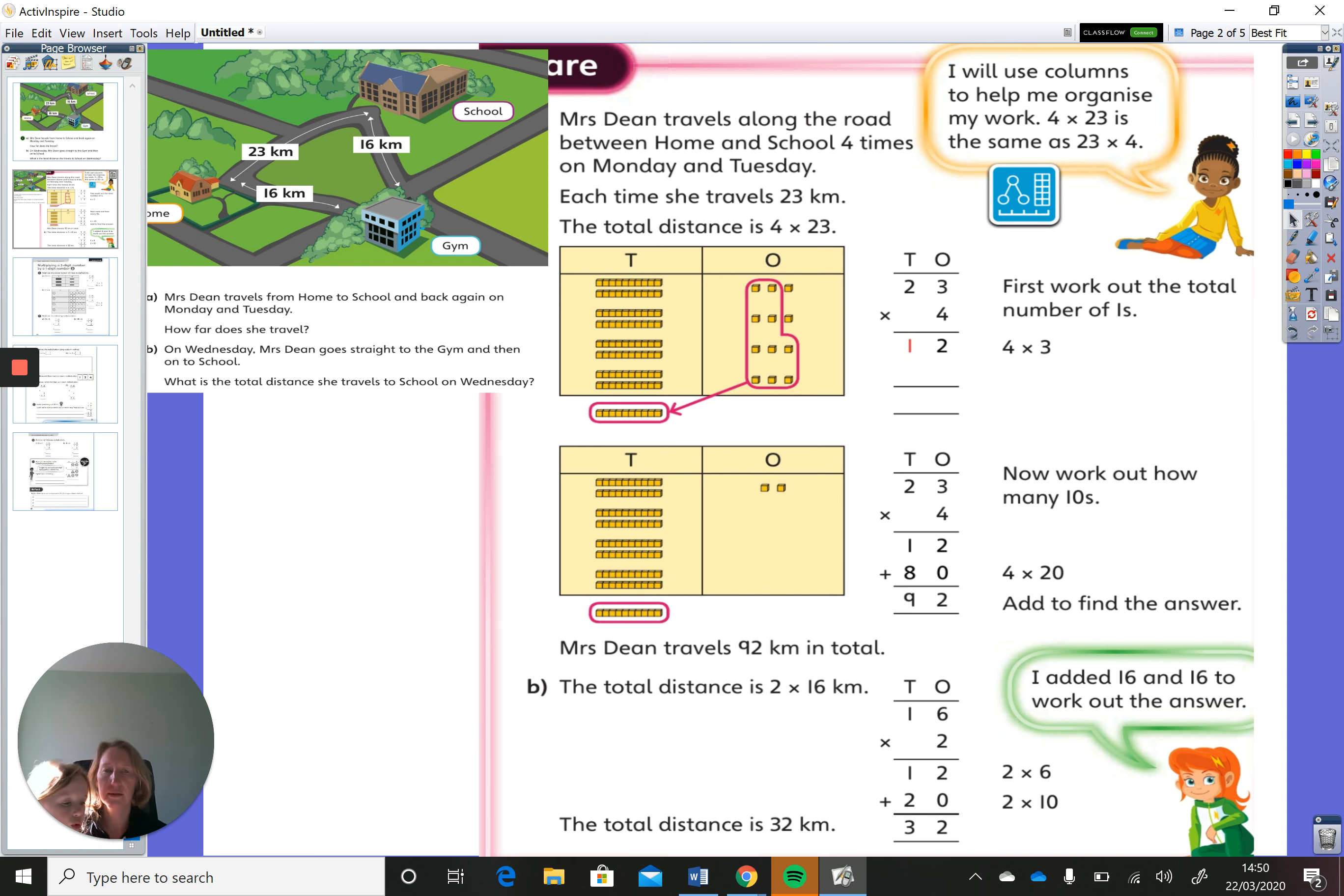Now don't forget that last step. So you've worked out what the 1s are, and then you've worked out what the 10s is, but you mustn't forget the last step of adding those two numbers together, okay? So your last step is saying to yourself, what is 80 plus 12? And 80 plus 12 is 92, okay? So the answer to that first question was, how far does Mrs. Dean travel? She travels 92 kilometres in total.